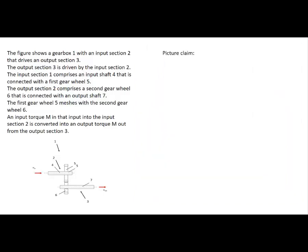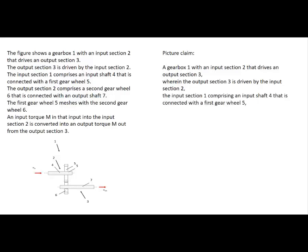Now let's derive a picture claim from that. All we need to do is take the essential elements from the figure description and put them together in proper claim language. We start: a gearbox 1 with an input section 2 that drives an output section 3. Next sentence: wherein the output section 3 is driven by the input section 2. This sentence is redundant but as we let a robot do it we just accept that it is there — later we can strike it out. Next sentence: the input section comprising an input shaft 4 that is connected with the first gear wheel 5.